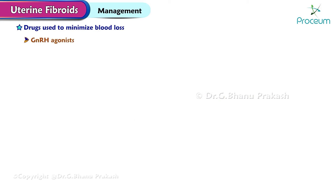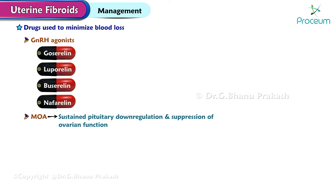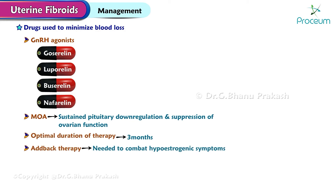Gonadotropin-releasing hormone agonist: drugs commonly used are goserelin, leuprorelin, buserelin, or nafarelin. The mechanism of action is sustained pituitary downregulation and suppression of ovarian function. Optimal duration of therapy is 3 months. Add-back therapy may be needed to combat hypoestrogenic symptoms.